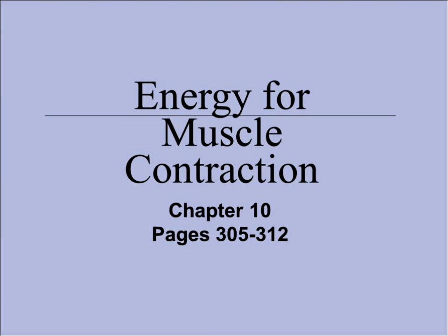Hello, everyone, and welcome to yet another installment of Chapter 10, the Muscle Chapter. This is the longest chapter we've had so far. Today we're going to talk about energy for muscle contraction — specifically the role of ATP and glycolysis, and also fermentation. We'll talk about exactly where that ATP comes from that's needed to recock the myosin head. This session will only cover just that portion.